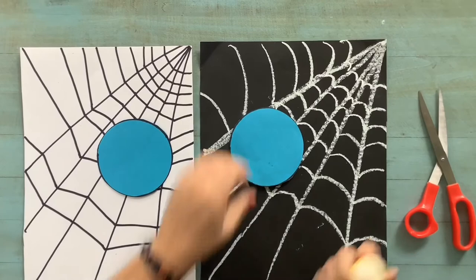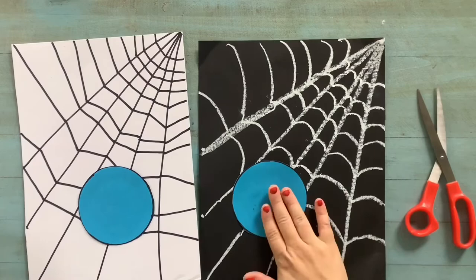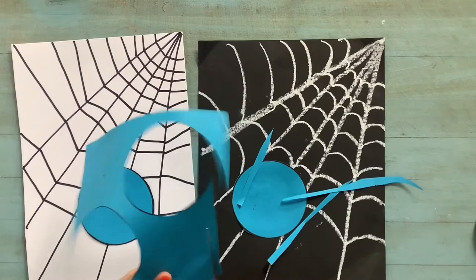Now I'm going to glue my circles onto my paper. One of these circles, I will use a marker to create the legs. But on the other one, I'm going to actually cut a few long skinny rectangles for my spider's legs.